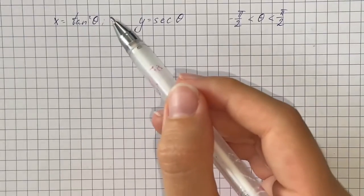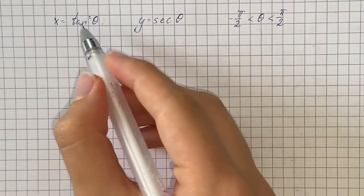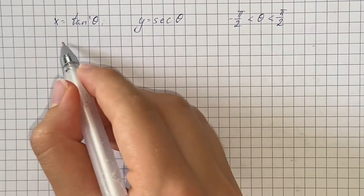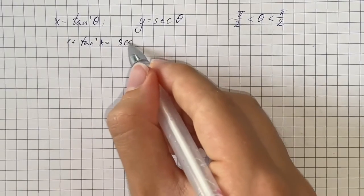We have to eliminate the parameter to find the Cartesian equation of the curve. So we're going to use the Pythagorean identity that 1 plus tangent squared of x equals secant squared of x.